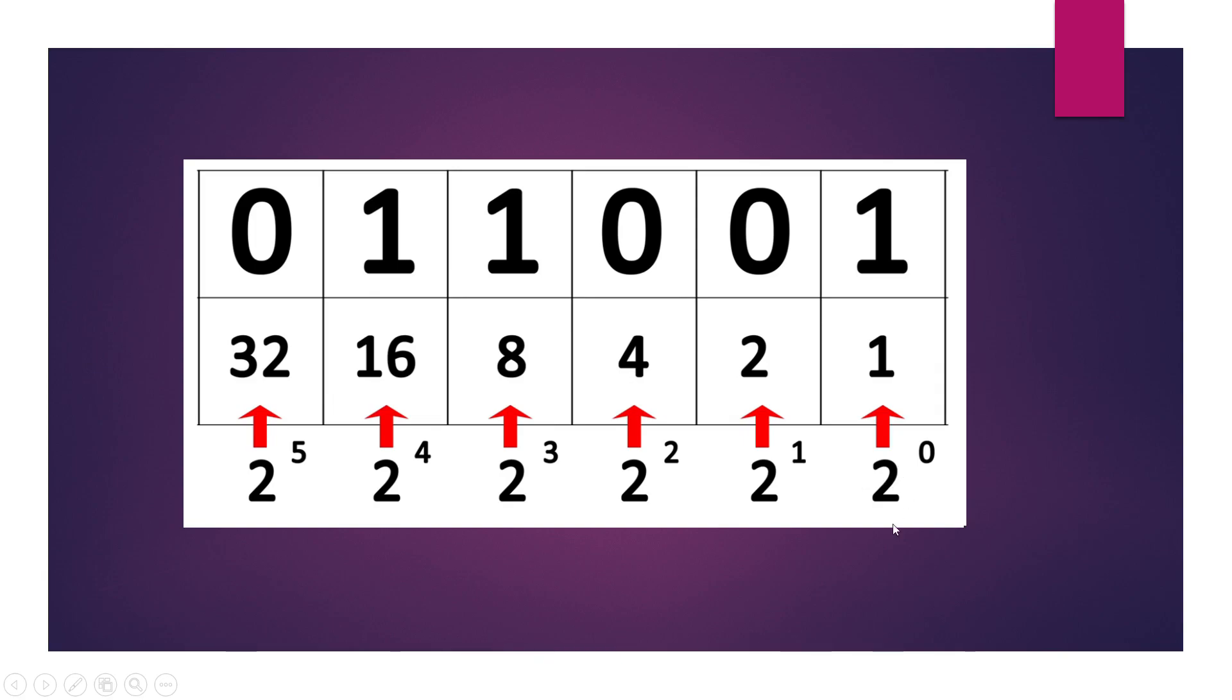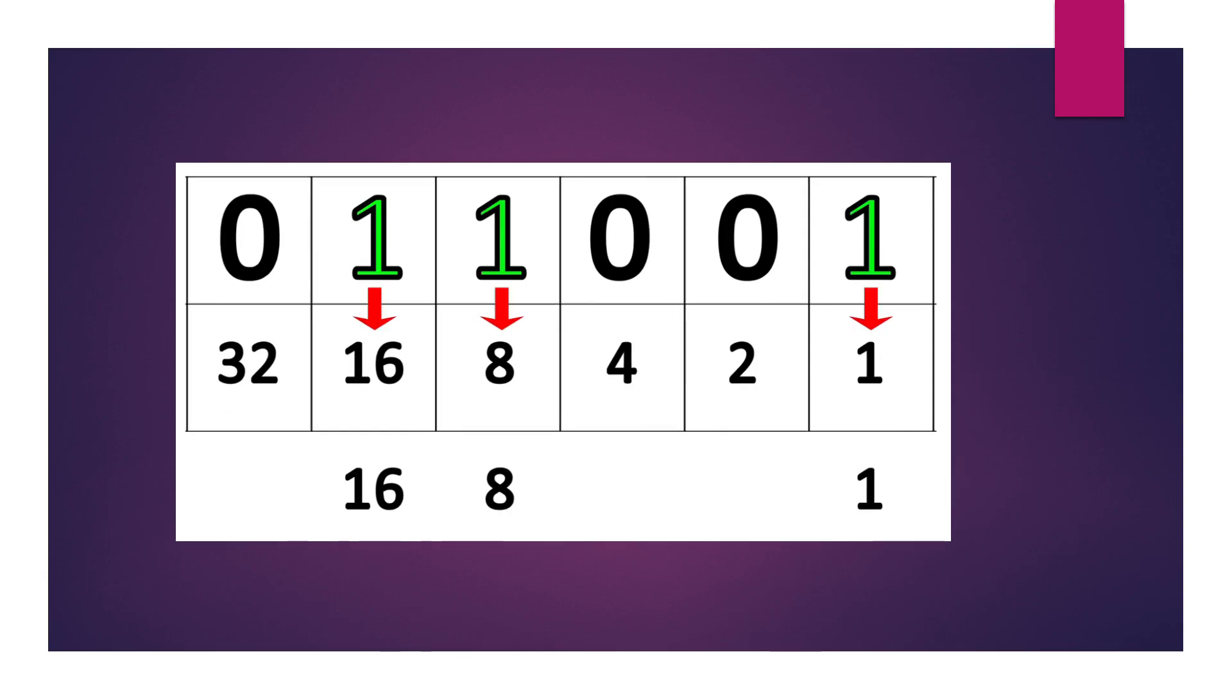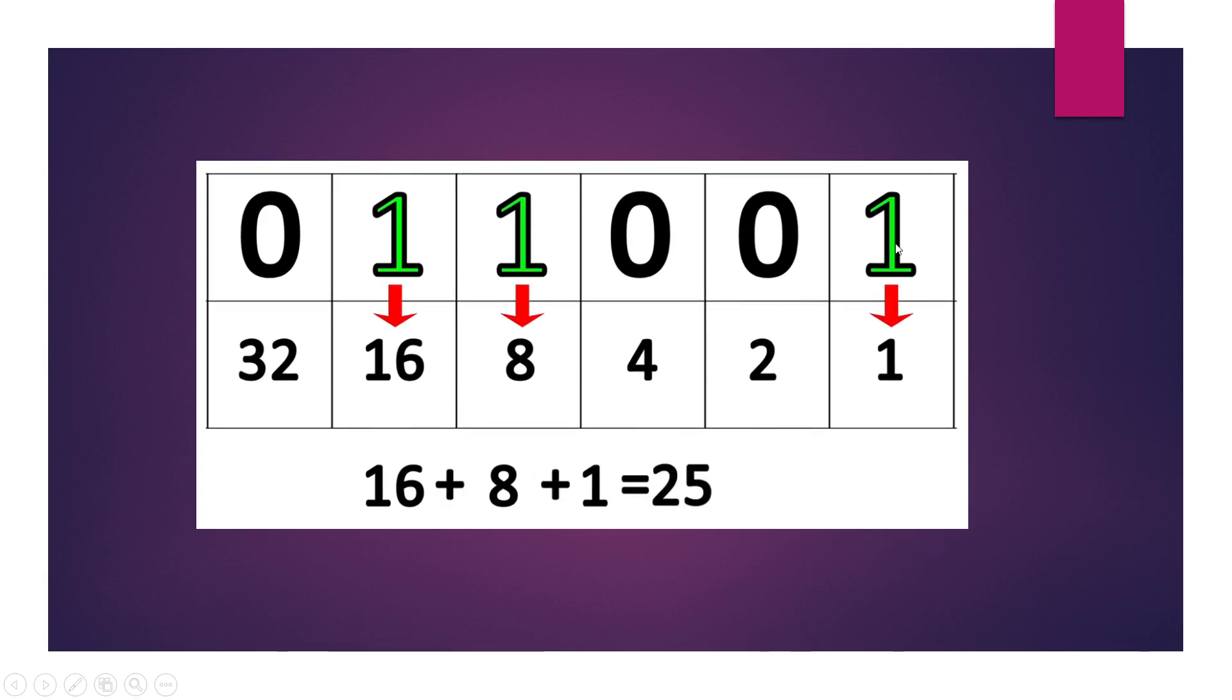2 raised to the power 0 equals 1, 2 raised to the power 1 equals 2, then 4, 8, 16 and so on. And if you want to know what this number is in decimal system, you have to write all the 1s with their corresponding number and ignore all 0s and simply add this number. 1 times 1 is 1, 1 times 8 is 8, 1 times 16 equals 16. When you add them up it is 25.